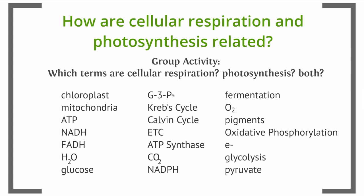But in fact, if you look at glycolysis, G3P is going to be a piece of the first step of cellular respiration as well. Krebs cycle and Calvin cycle sort of sound the same, but Krebs cycle is part of cellular respiration — it's step two — and Calvin cycle, or the light-independent reactions, are step two of photosynthesis. Electron transport chains are found in both the light-dependent reactions and in oxidative phosphorylation, so that would be both.